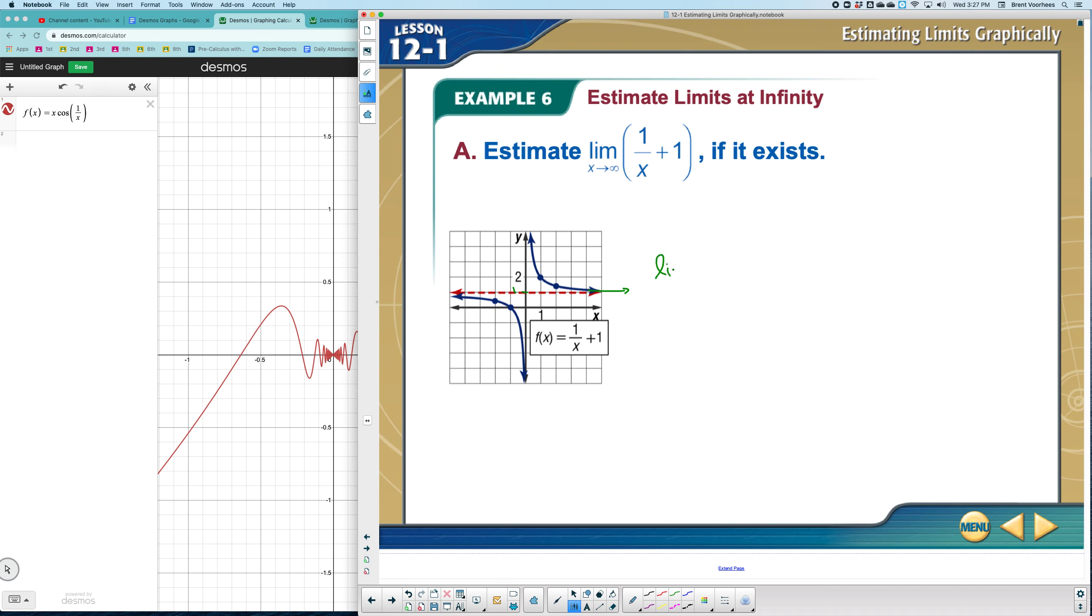And the Y value it's getting flat on is 1. So the limit of 1 over X plus 1 as X approaches infinity would equal 1 here, because that's the point I'm getting really flat on. The Y value that I'm getting flat on. Let me make that look more like an arrow. An arrow as we approach infinity.